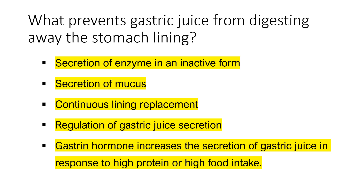The secretion of gastrin is controlled by the contents of food in the stomach — specifically, the amount of proteins or amino acids present. If there is a greater amount of food, more gastrin will be secreted and more gastric juice will be produced to aid digestion. If not, gastrin will stop being secreted, preventing excess amounts of gastric juice from being released by the gastric glands.